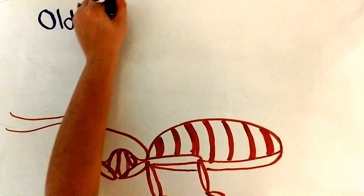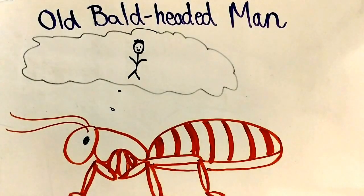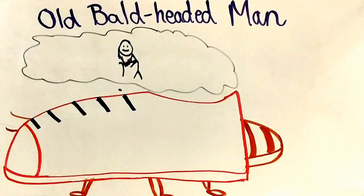The Navajo have their own name for this insect, which in English means old bald-headed man. They believe that if you killed one of these insects, you would become bald yourself.